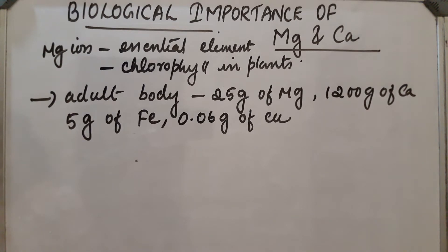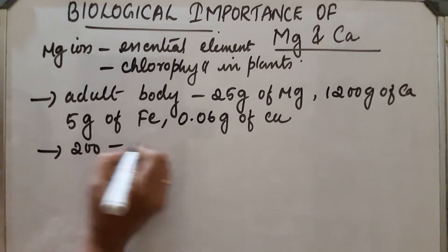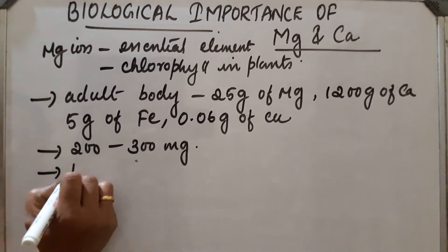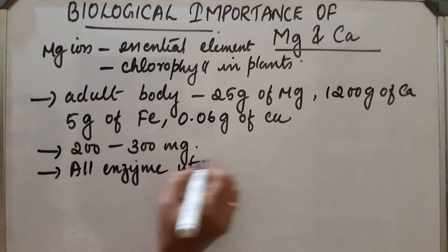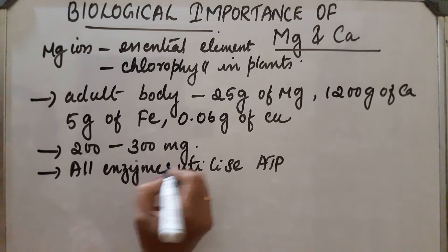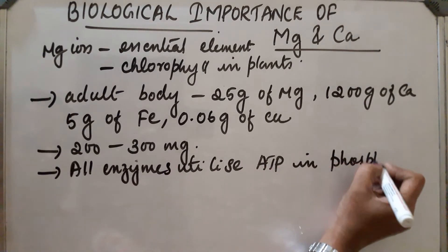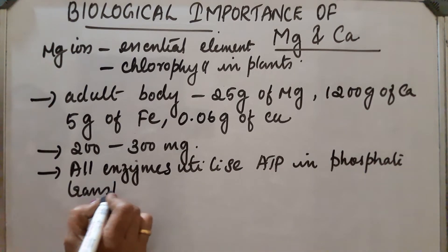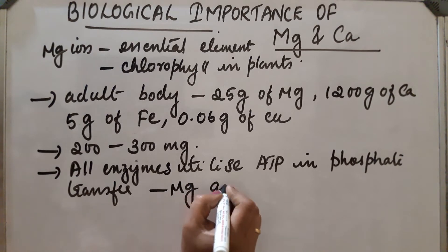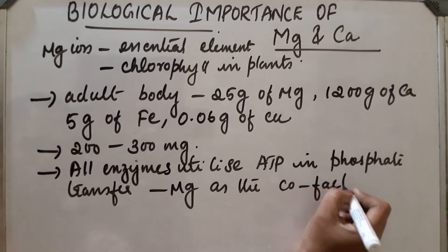The daily requirement in the human body is estimated to be 200 to 300 milligram. All enzymes that utilize ATP in phosphate transfer require magnesium as the cofactor.